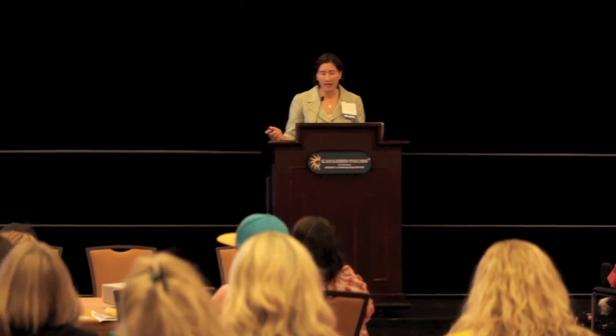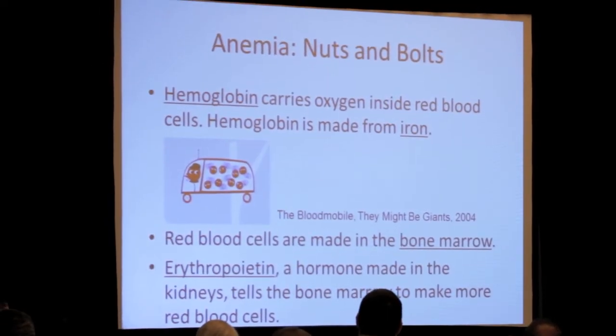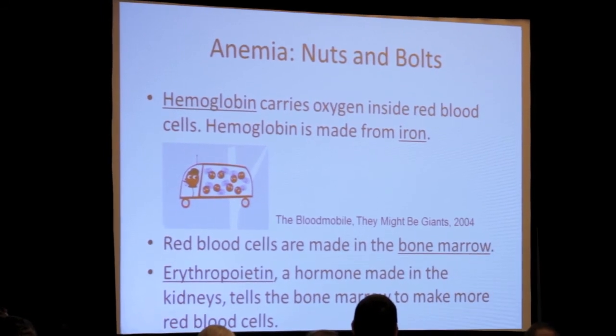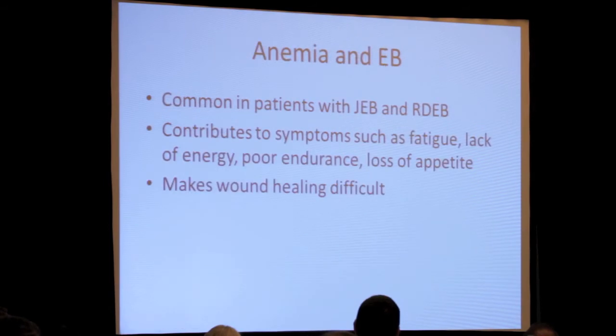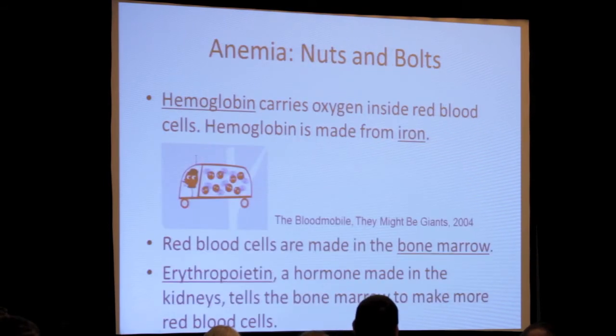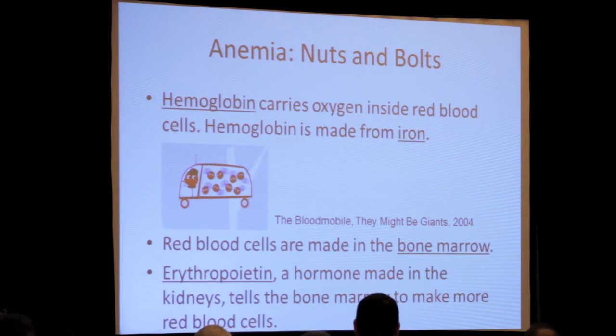Think about bone marrow as a factory. It's a factory that makes lots of products, but the product we're going to focus on in this talk is the red blood cells, which carry oxygen out to our tissues. You can think about a hormone called erythropoietin as sort of like the orders that come into that factory. Erythropoietin is a hormone that's made in our kidneys and basically stimulates the bone marrow to make more red blood cells.